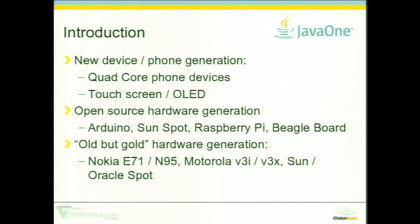And we also have what we are calling 'old but gold' devices — old hardware that is still very useful for different kinds of projects. I love the Nokia E71 phone. It's a great phone, very strong, and Java ME runs perfectly inside. We also have Sunspot or Oracle Spot. About 20% of the audience has one. And we have other boards running Java ME that you can use to make hacking projects.